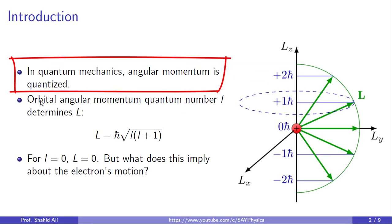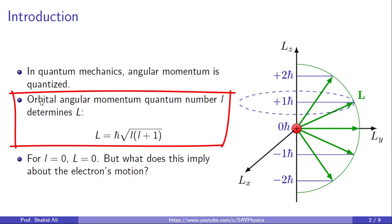First, in quantum mechanics, angular momentum is not continuous, it is quantized. This means electrons can only occupy specific angular momentum states defined by discrete values, not just any arbitrary magnitude. Next, the orbital angular momentum quantum number, denoted by l, plays a central role here. It determines the magnitude of the angular momentum vector L. The relationship is given by the equation L equal h bar square root l into l plus 1. This is not just a mathematical curiosity, it reflects the inherent uncertainty and geometry in quantum mechanics.